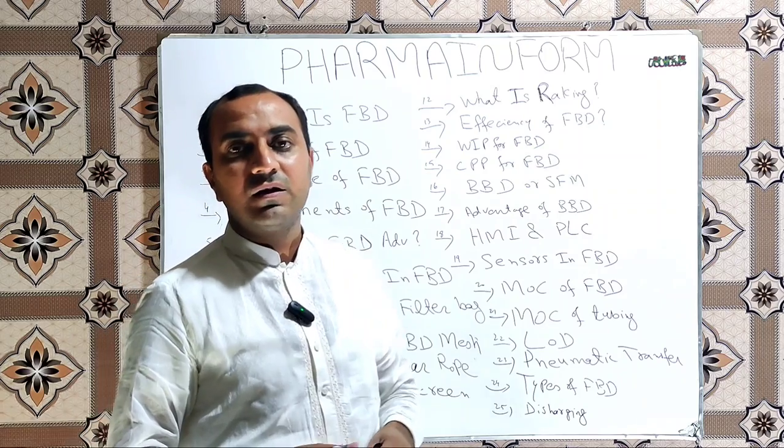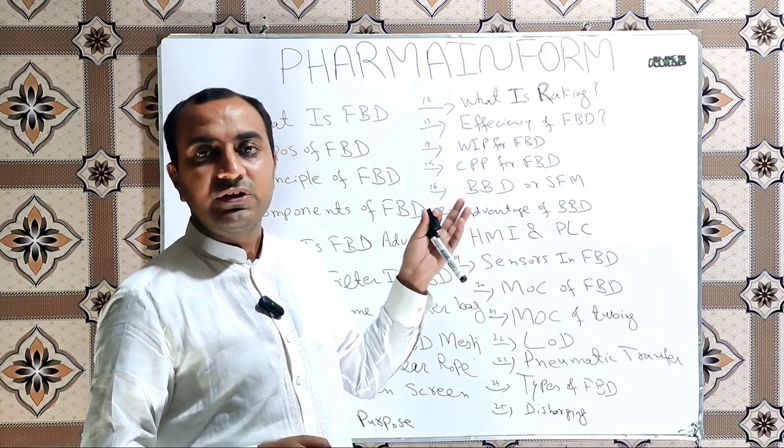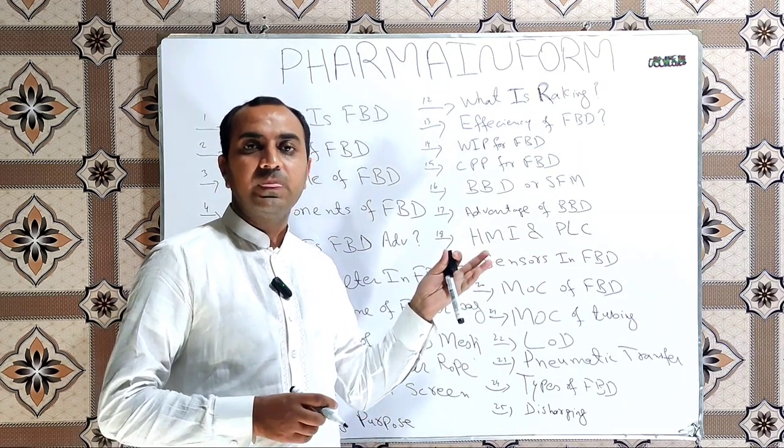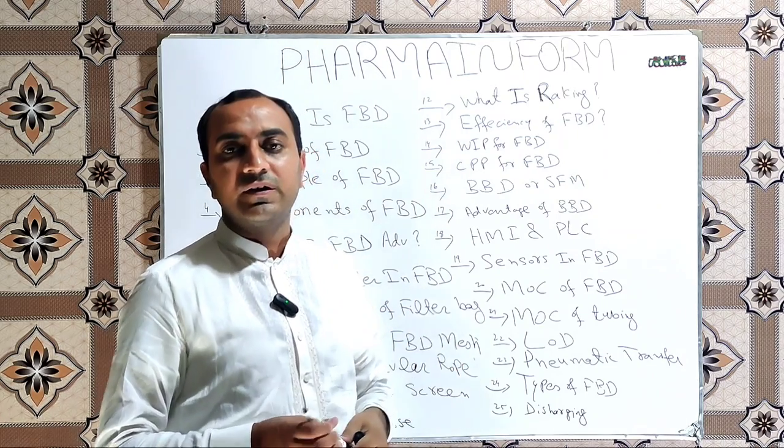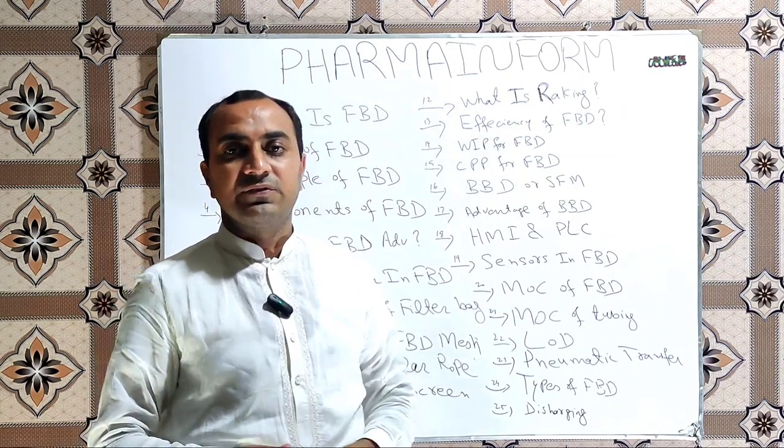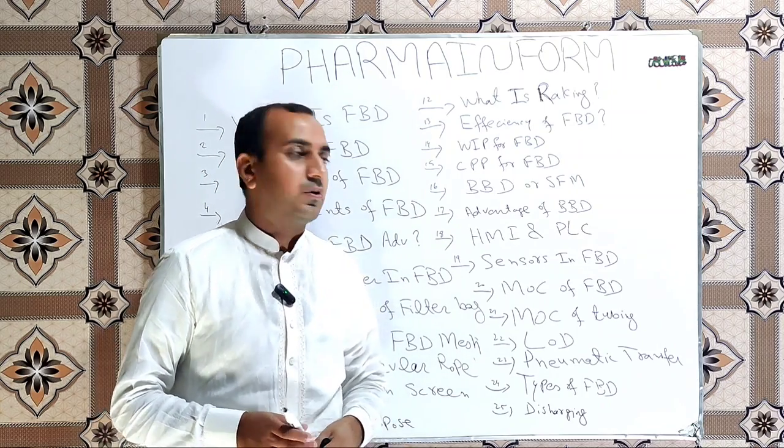If there is any damage to the FBD filter or there is any pin hole in the filter, the powder leakage through the bag to the return duct is detected through these sensors and the dryer is shut down.